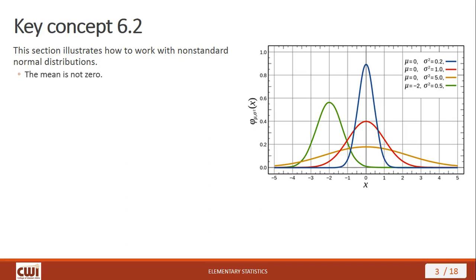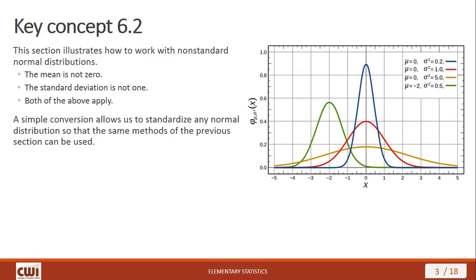A non-standard normal distribution might be one where the mean is not zero. It can also be one where the standard deviation is not one. Or it could be that both of these criteria apply — the mean is not zero and the standard deviation is not one. Typically in the real world, this is the case that you find. There's a simple conversion process that allows us to standardize any normal distribution, so the tools from the previous section become available to us.